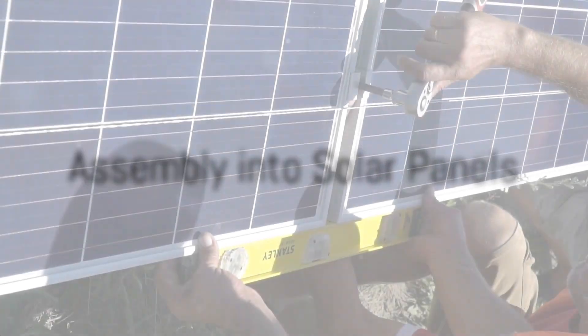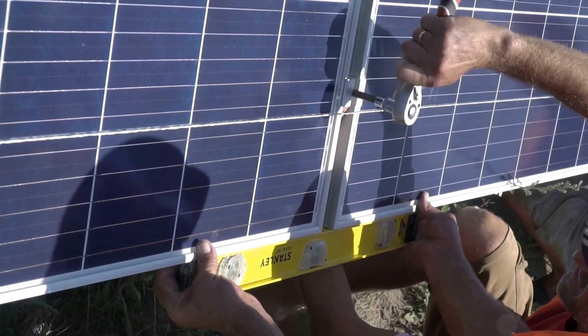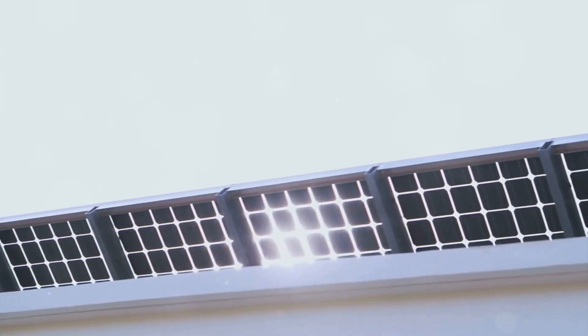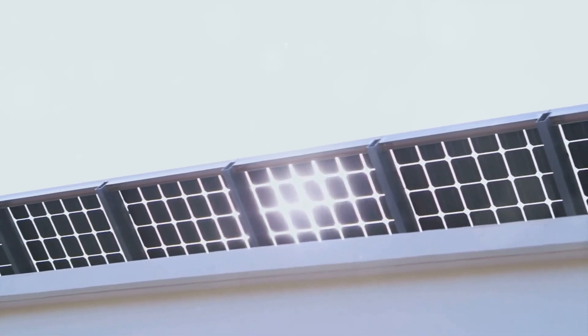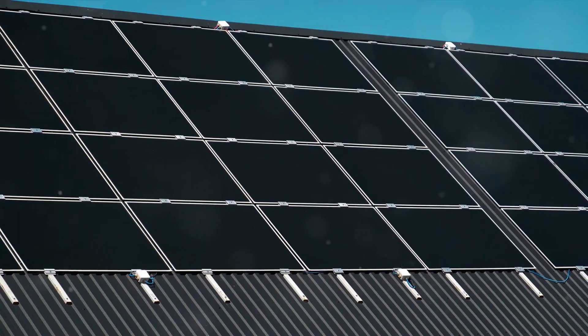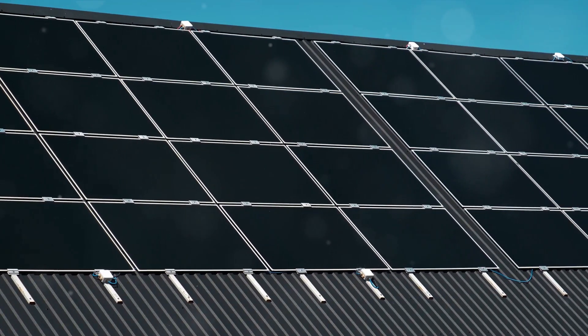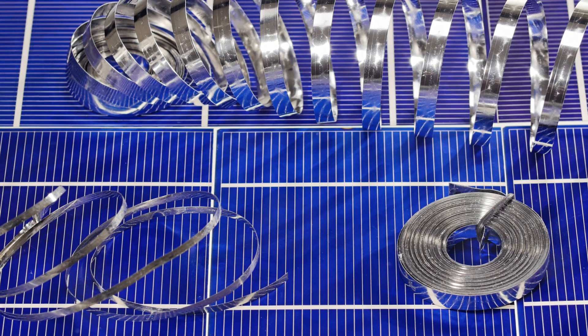But a single solar cell isn't very powerful on its own. That's why we assemble them into solar panels. Now let's explore the fascinating journey of transforming these individual solar cells into a fully functional solar panel. The process involves three key steps: cell layout and stringing, lamination, and testing and framing. Firstly, the individual cells are meticulously laid out in a specific arrangement.